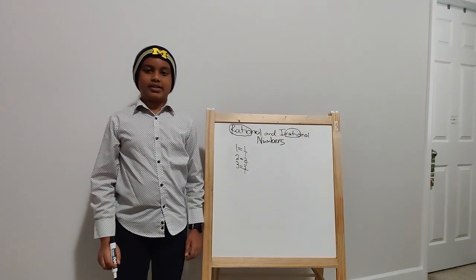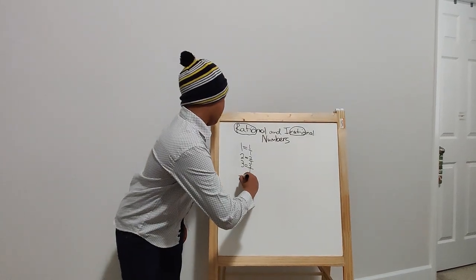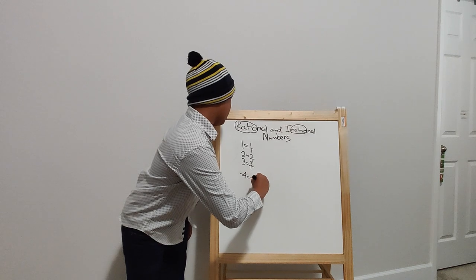You can also have negative numbers as a rational number. Negative 4 can be written as negative 4 over 1.